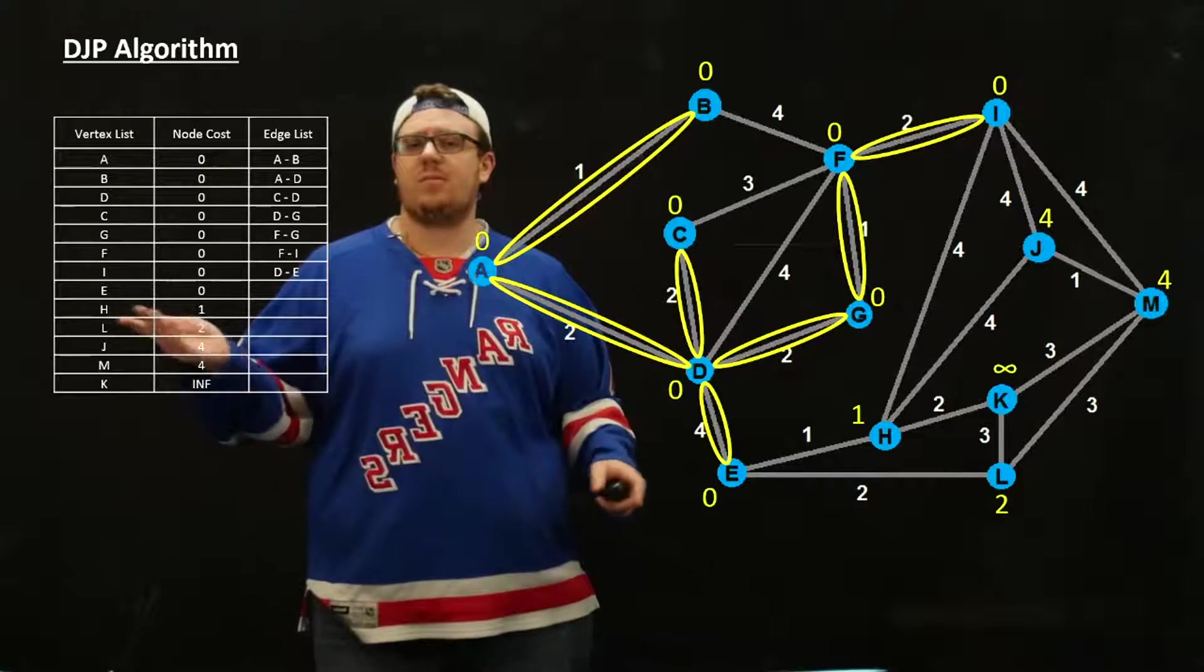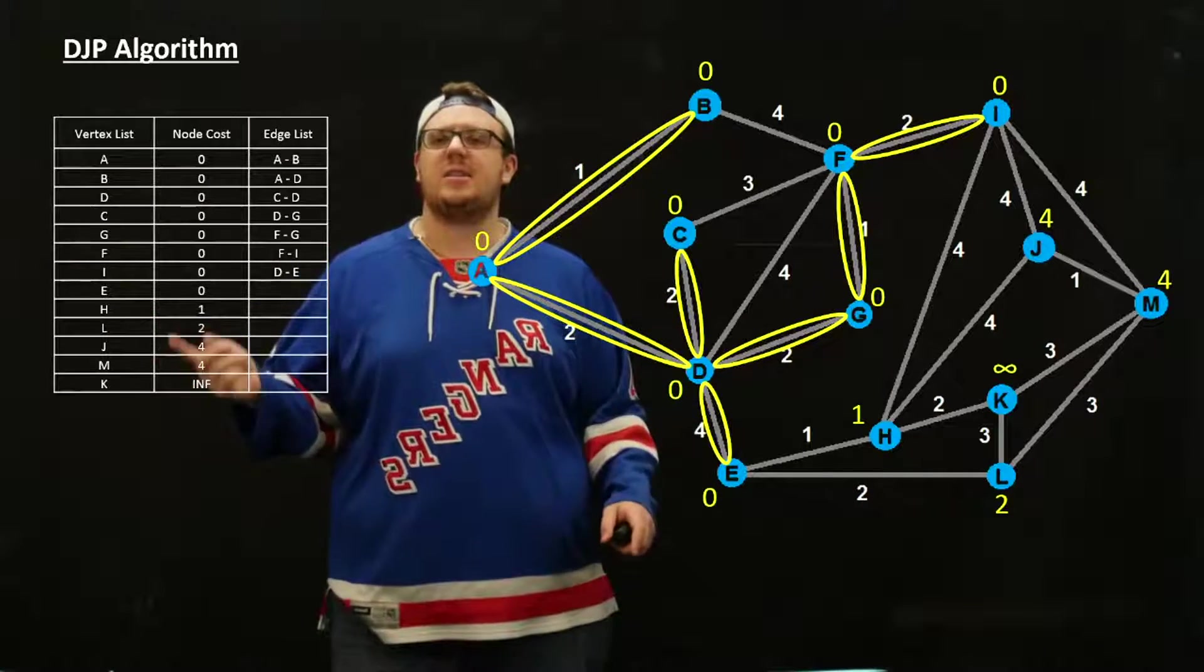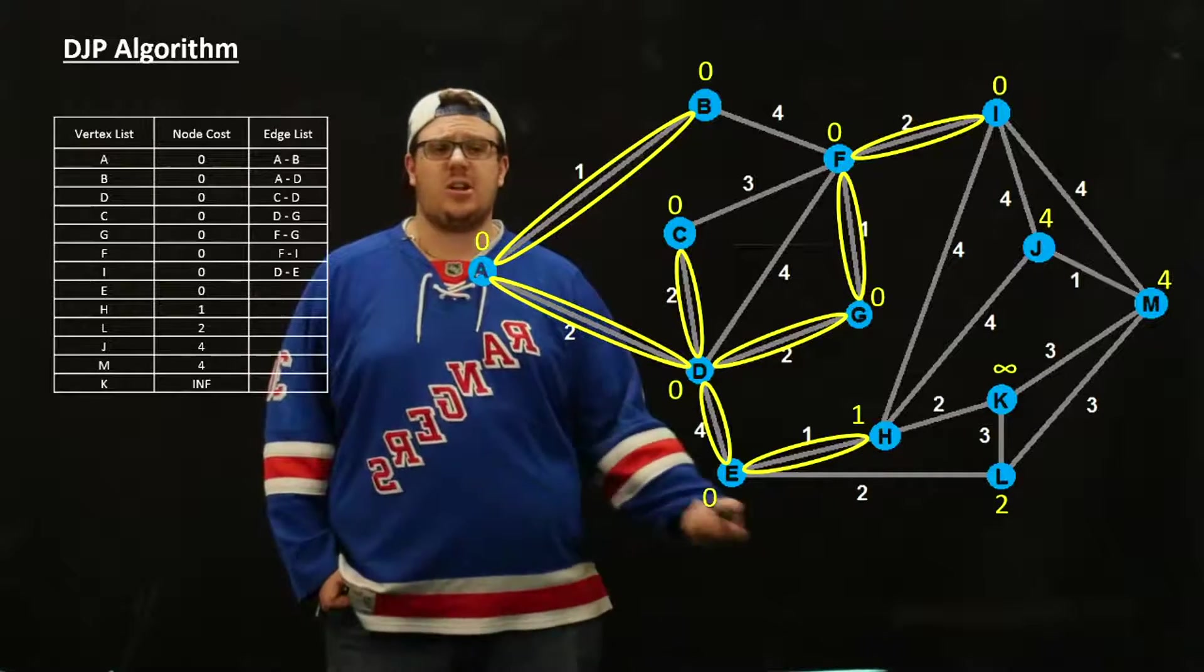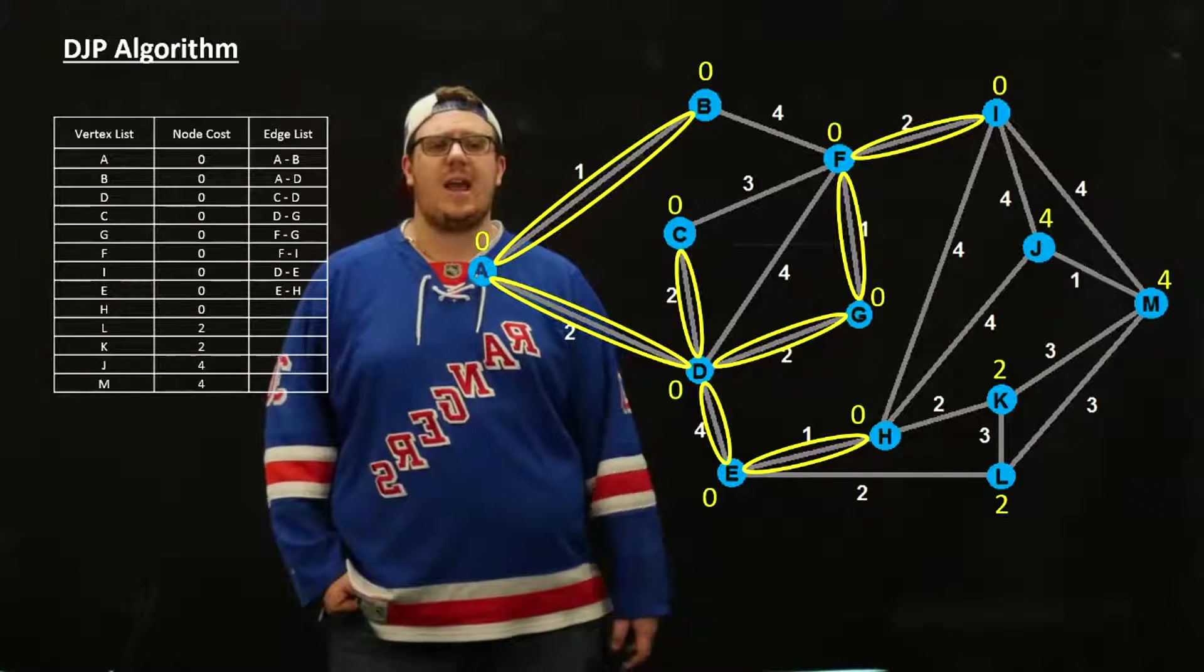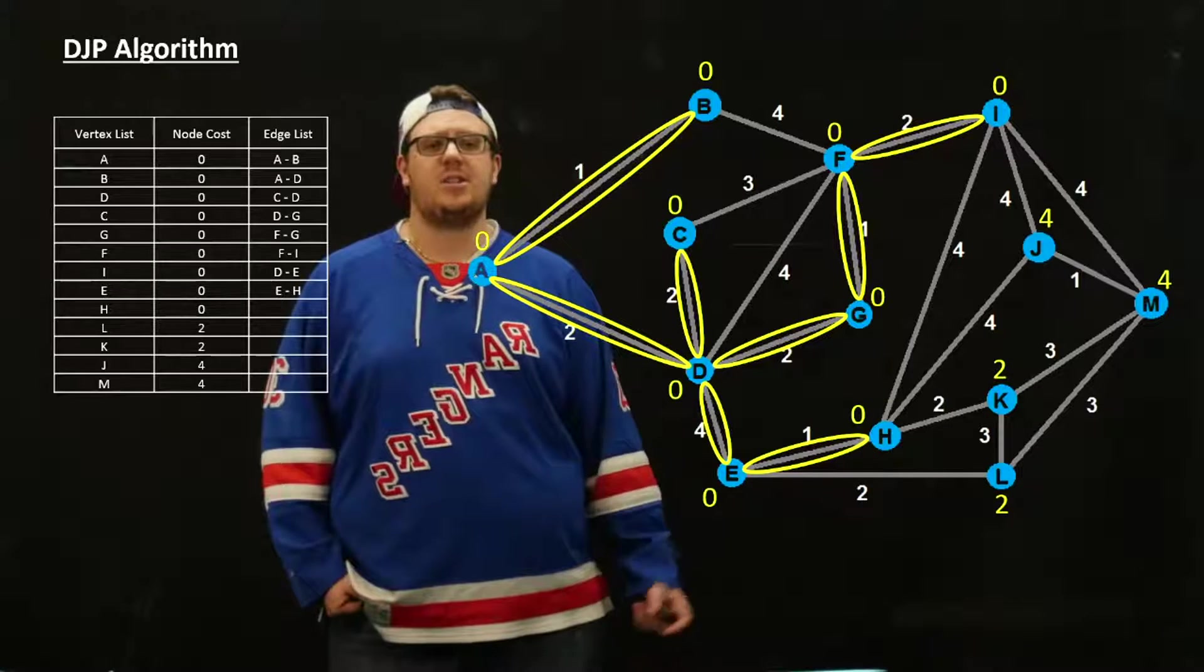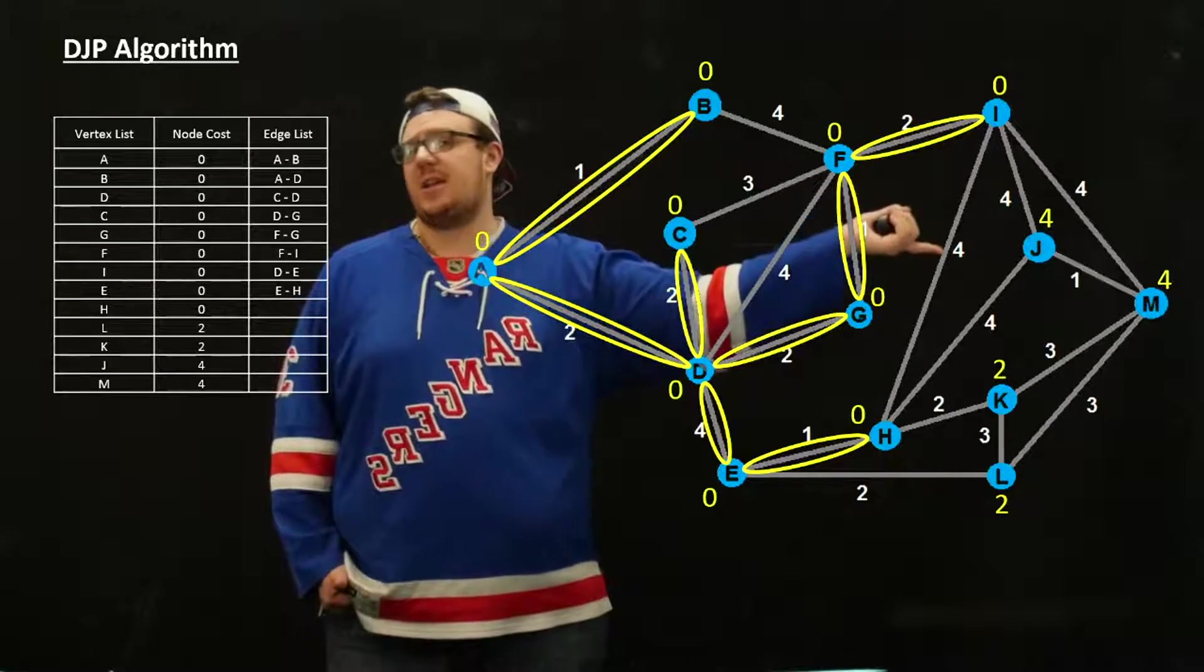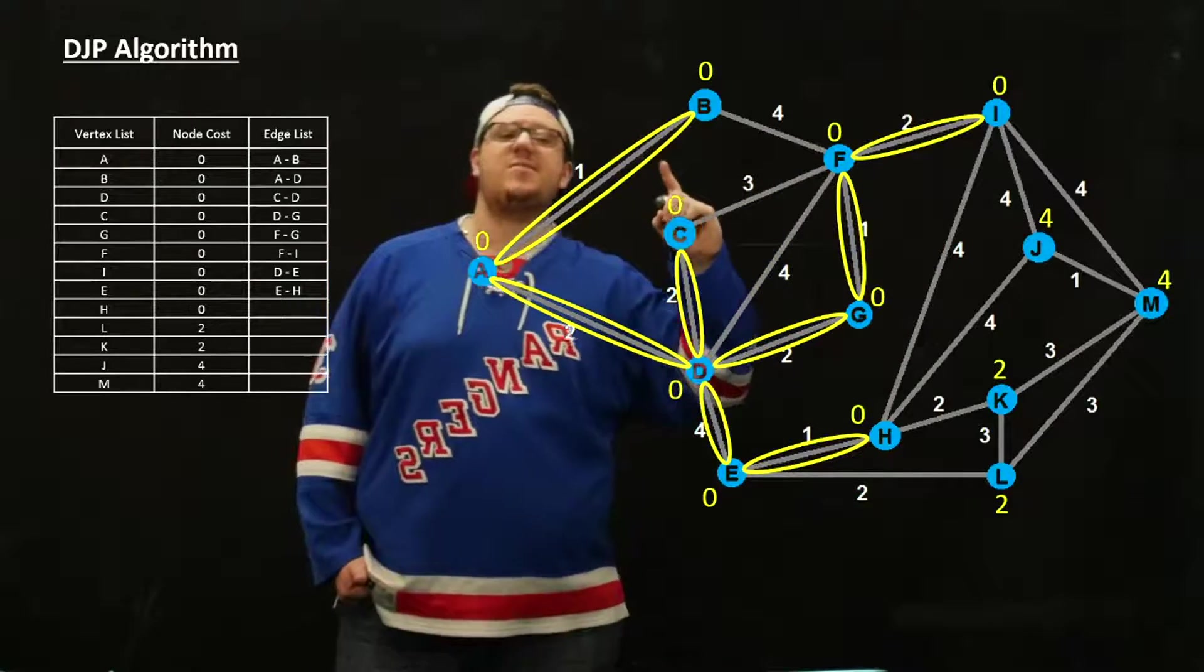The next thing smallest in our graph here is H at 1, so we're going to add H. That should update to zero, and we can add K now as being 2. That doesn't update J because J is still a distance 4 away.